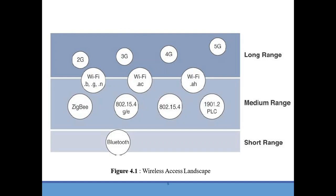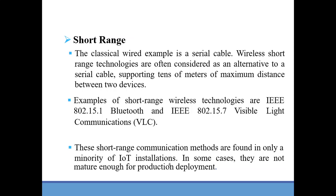2G, 3G, 4G, and 5G technologies come under long range. The distance covered under short range is tens of meters maximum between two devices. Examples of short range wireless technologies are IEEE 802.15.1 Bluetooth and IEEE 802.15.7 Visible Light Communication. A minority of IoT installations use short range communication methods.